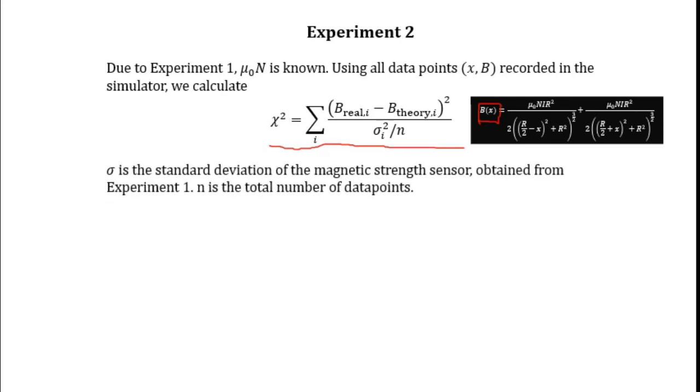Sigma is the standard deviation of the measurement which has been calculated in experiment number one. Also, the lowercase n is the total number of data points generated by the simulator.